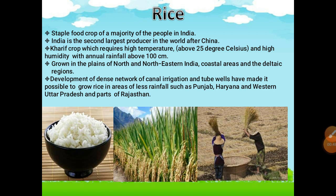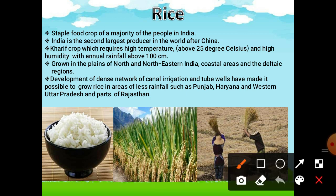The first and most important food crop is rice, followed by wheat and other crops. Rice is the staple food of the majority of people in India. India is the second largest producer in the world after China. Rice is a kharif crop which requires about 25 degree temperature and high humidity with annual rainfall of above 100 cm. These are the climatic conditions for rice. It grows in the plains of north and northeastern India, the coastal regions and the deltaic region.